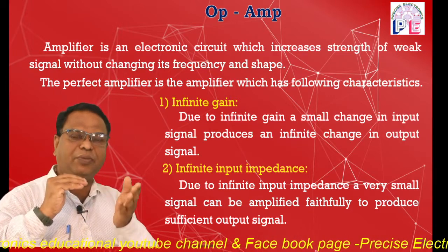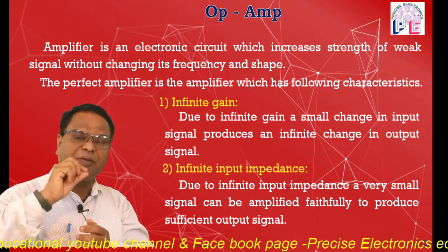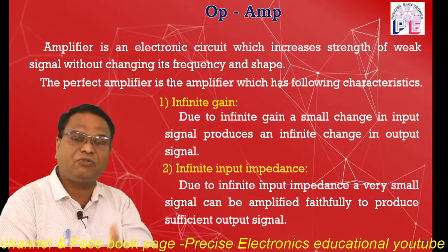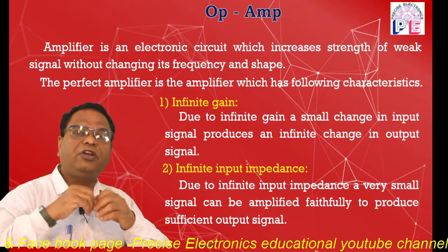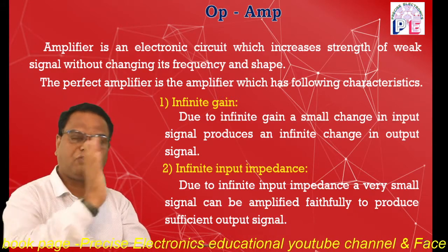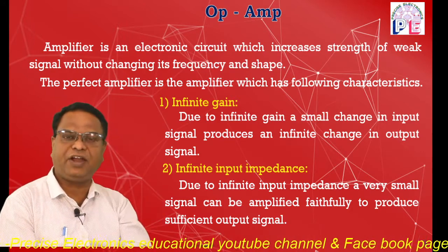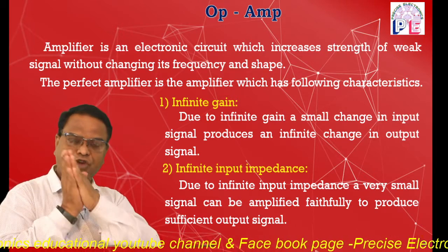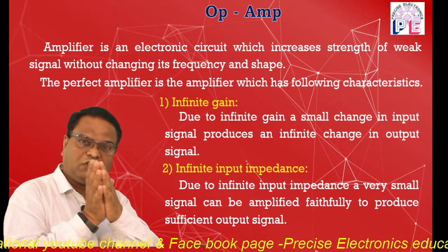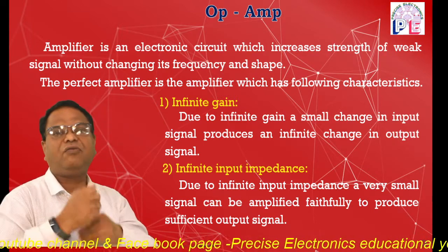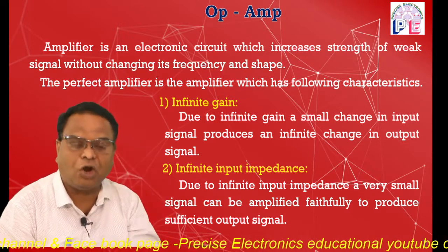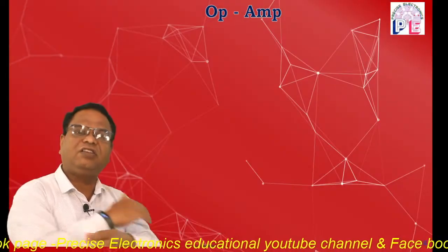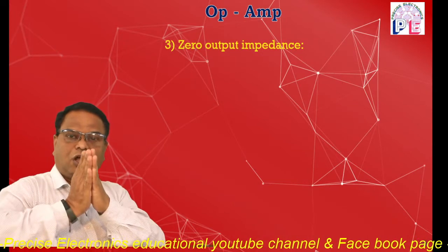V = IR, where R is the impedance. If impedance is very high, there is a small change in current — current may vary in the micro or nano range — but as impedance is very high, we get a sufficient input voltage. That input voltage can be faithfully amplified to get a sufficient output voltage. Due to infinite input impedance, a small signal can be faithfully amplified.